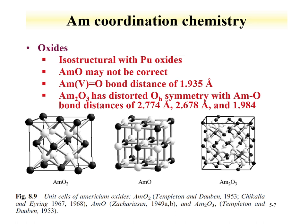The coordination of americium oxides is shown to be isostructural with plutonium oxides, which is not surprising since they have similar ranges of oxidation states. The Am2O3 has a distorted C2h symmetry, and the bond distances for americium-oxygen have been evaluated. The unit cells are shown for the dioxide, the monoxide, and the Am2O3.